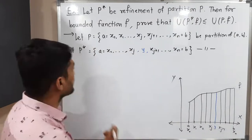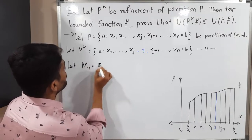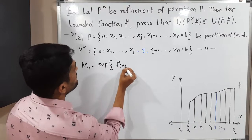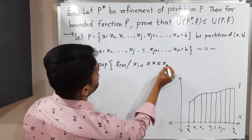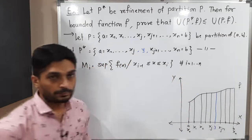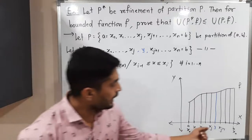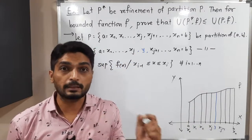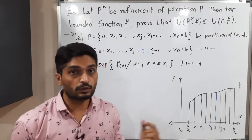Let capital Mᵢ denote the supremum of F(x) such that Xᵢ₋₁ ≤ x ≤ Xᵢ, for all i running from 1 to n. This is capital Mᵢ. But if you add point Y between Xⱼ and Xⱼ₊₁, the supremum over the sub-partitions for those sub-intervals can be different.